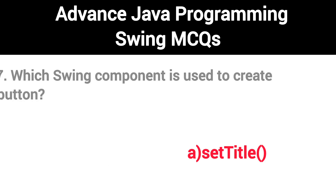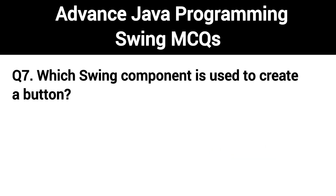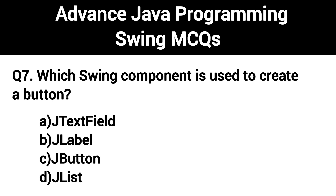Q7. Which Swing component is used to create a button? The right answer is Option C: JButton.